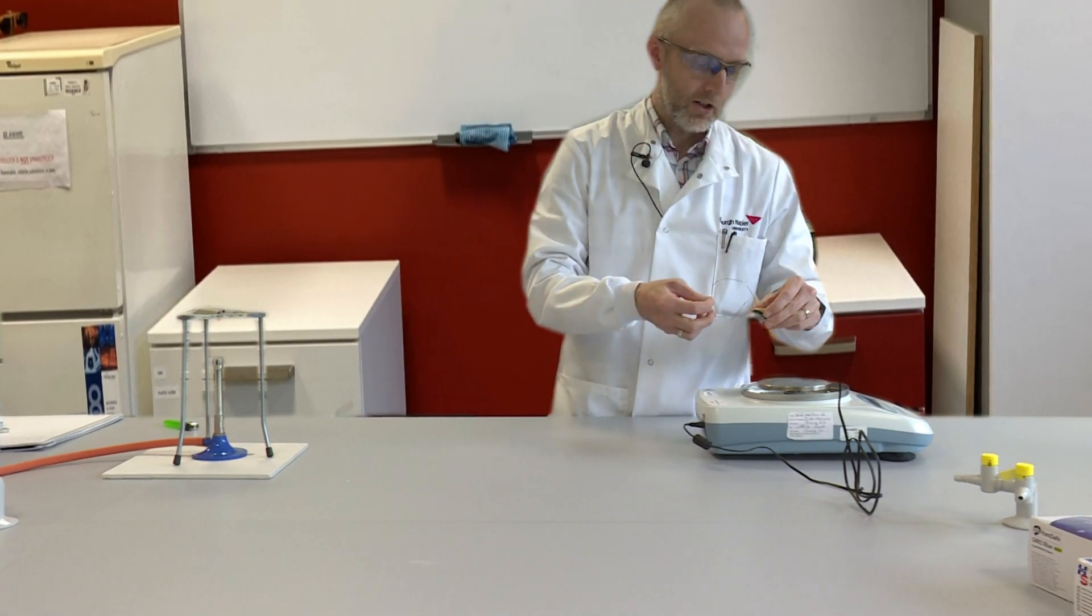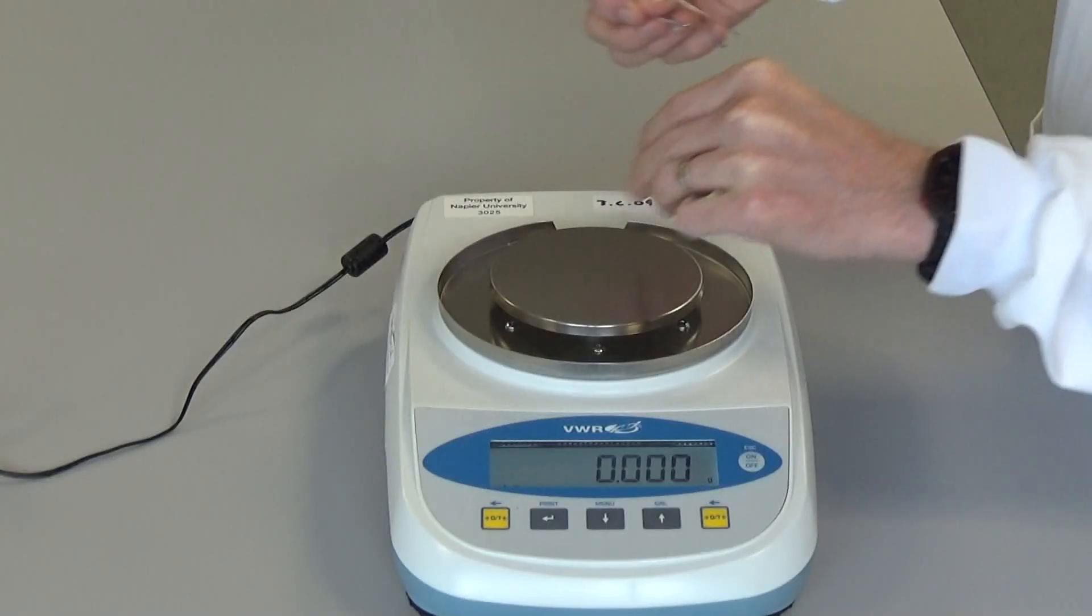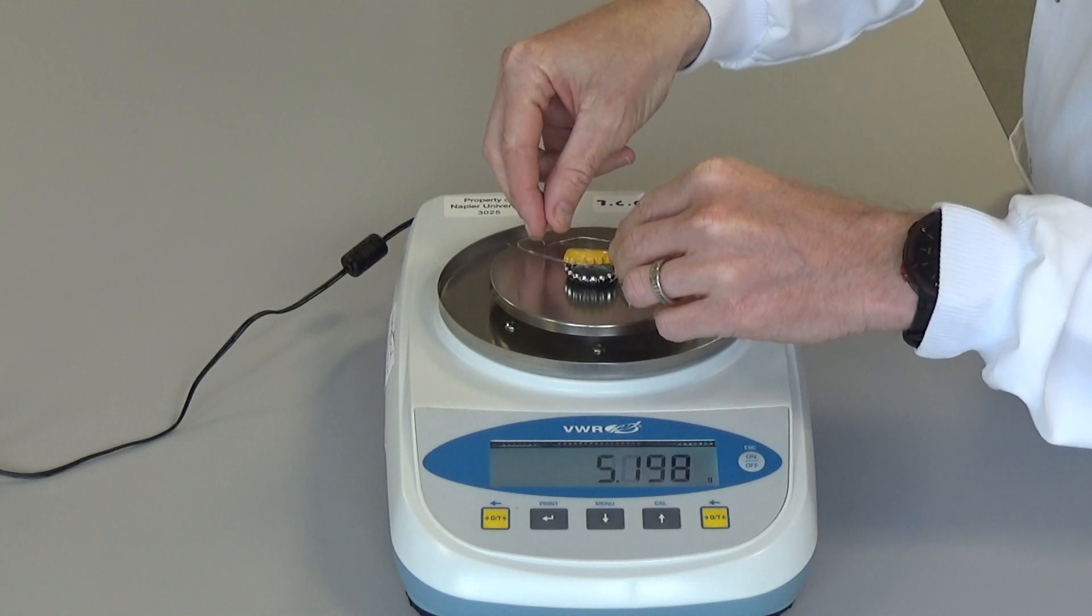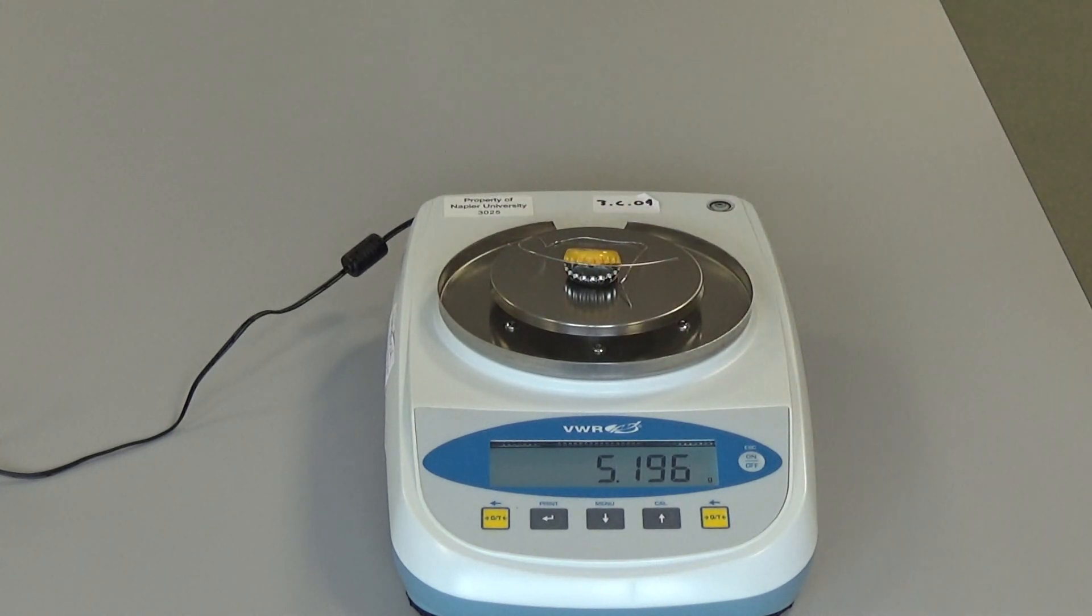So the first thing I'm going to do, I'm going to heat it inside these bottle tops held together by nichrome wire. So I'm going to take the mass of the two bottle tops I'm using and the nichrome wire, and that is a mass of 5.196 grams, so I'll take a note of that.